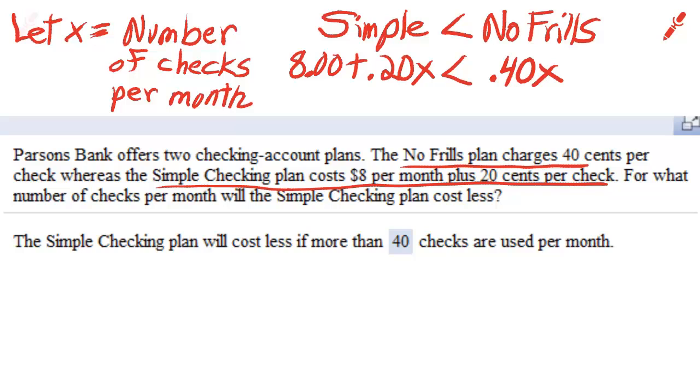Now that's your inequality statement. What you need to do is solve for x. And you should get that the simple checking plan will cost less if more than 40 checks are used per month.